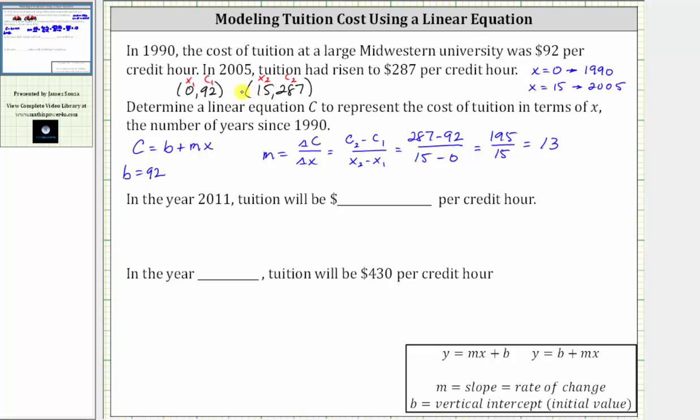The tuition cost is increasing by $13 per credit hour per year. Now that we know m equals 13, we can write our equation: C equals 92 plus 13x.